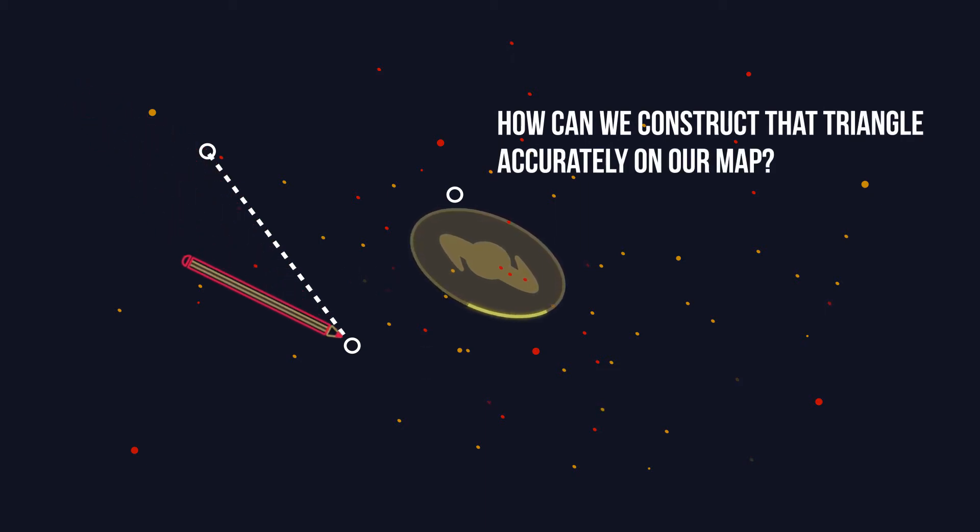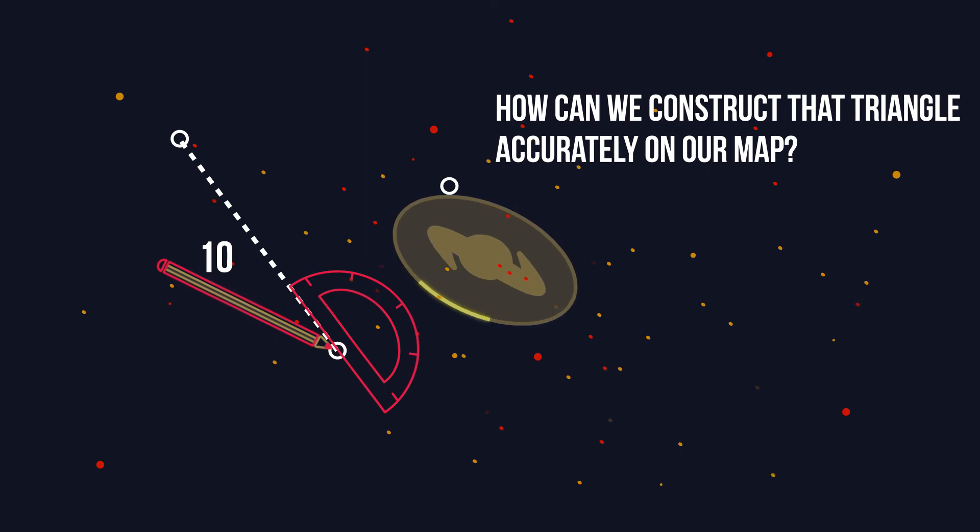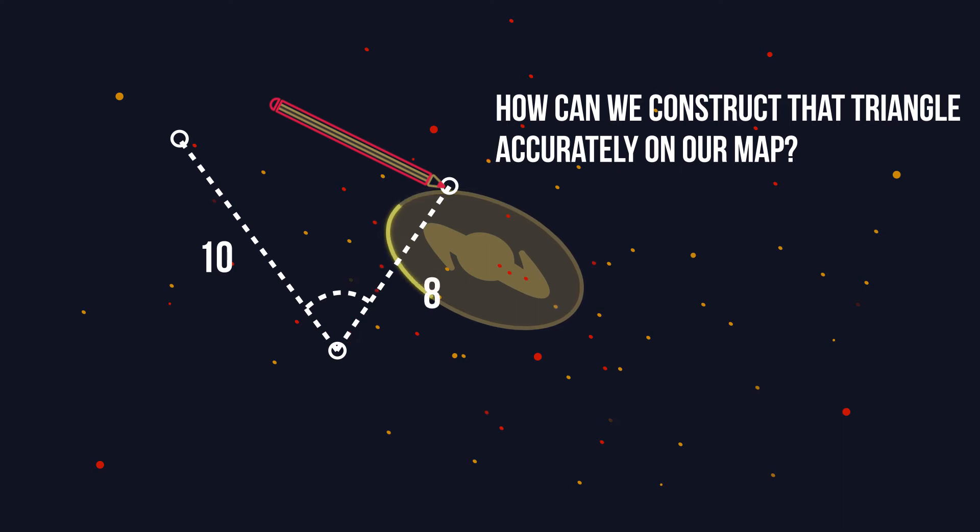Start by drawing the 10 light year line and label it as 10. With a protractor measure 75 degrees from the line and make a mark. Now along that line measure 8 light years and join up the triangle.